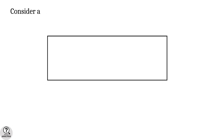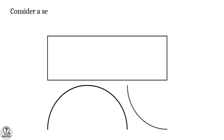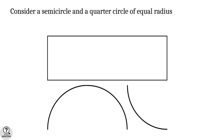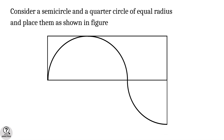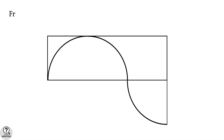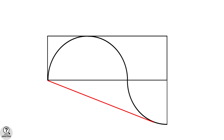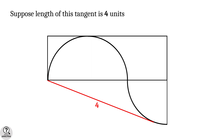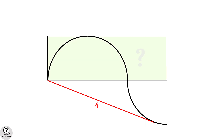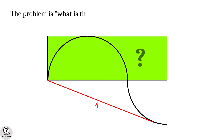Consider a rectangle. Then consider a semicircle and quarter circle of equal radius and place them as shown in the figure. From one corner of the rectangle, a tangent is drawn to the quarter circle. Suppose the length of this tangent is 4 units. Then the problem is: what is the area of the rectangle?